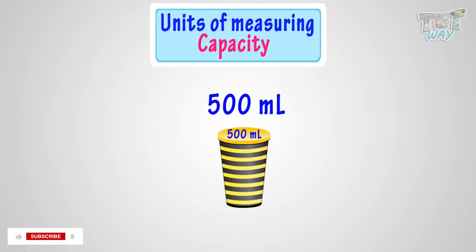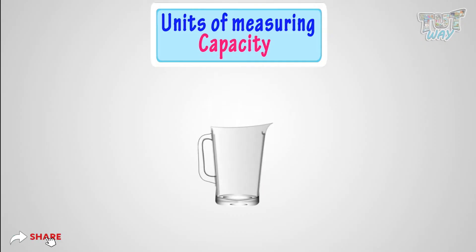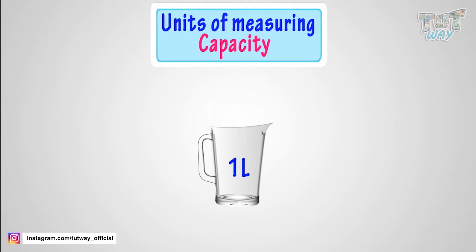Now, let's learn how much quantity is 1 liter. Here, we have a jug. The exact amount of water this jug can contain is 1 liter. So, its capacity is 1 liter. That is, it can contain 1 liter of water or any liquid.